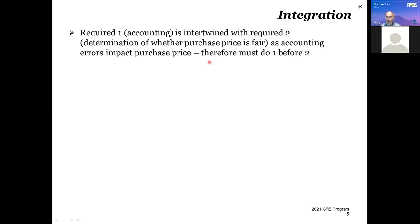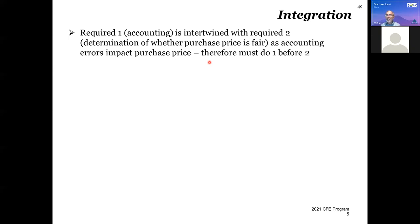Required number one, where you're dealing with accounting, is clearly intertwined with required number two, where you're determining whether the purchase price is fair, as the accounting errors impact the purchase price. I need to do required one first — figure out if there are errors, quantify them, and come up with a revised purchase price. I can't consider whether the purchase price is fair until I've revised it, because the revised purchase price may be very different than the original. So it's impossible to do two before one.